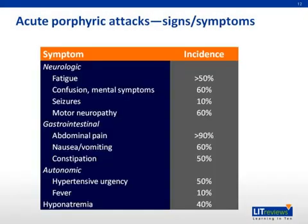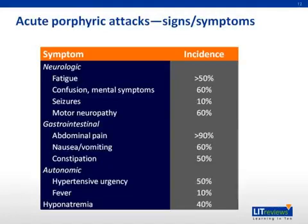This table lists the common spectrum of symptoms seen in an acute porphyria attack with reference to neurologic symptoms. Many or most attacks consist of a neurovisceral crisis where neurologic symptoms are accompanied by other signs and symptoms including abdominal pain, constipation, vomiting, and often autonomic signs like fever and hypertensive urgency. While these are not specific to porphyria, it should be considered in the differential diagnosis when unexplained neurologic changes occur in an otherwise healthy person in conjunction with autonomic symptoms or hyponatremia.